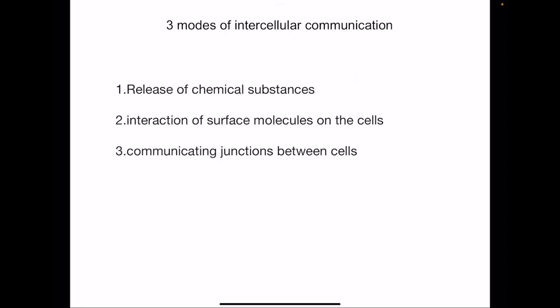What are the modes of intercellular communication? First, it can be due to the release of chemical substances. These chemicals can travel via blood to various cells of different organs, or they may act on adjacent cells. Second, it is due to the interaction of surface molecules on cells — certain proteins present on cells interact with other tissues. Third, there may be communicating junctions between cells. These are the three broad modes of intercellular communication.